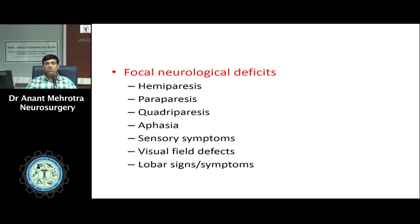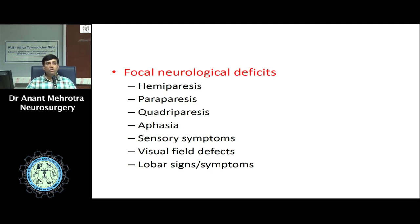Many tumors may present only with seizures without raised intracranial pressure. Seizures may be generalized tonic-clonic, complex partial, or simple partial. Certain tumors like gangliogliomas and DNETs are classically seen in children and their only manifestation is usually refractory seizures — the patient may be on multiple drugs and still have uncontrolled seizures, but dramatically, after removal of the tumor, seizure control occurs. Seizures, if properly evaluated, have localizing value — one can determine based on seizure history whether the tumor is on the right or left side, and whether it is in the frontal, parietal, temporal, or occipital lobe.